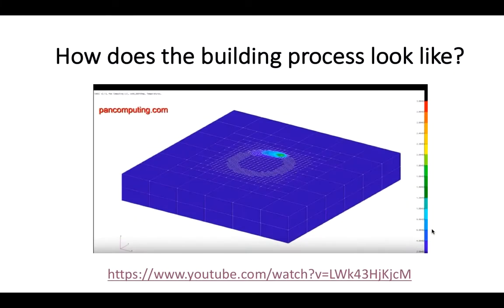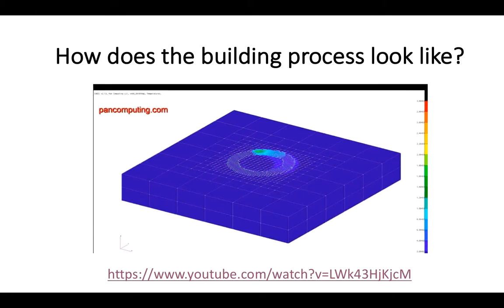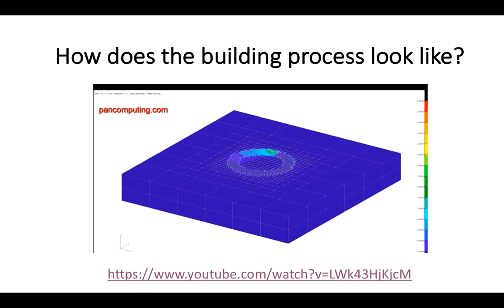Let's have a close look at how the building process works. In this short video, you can see the energy beam scanning and melting layers of material to achieve the desired shape. During this phase, many occurrences take place, and one of the most important is the heat transfer from the beam to the part.